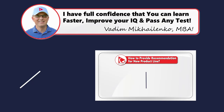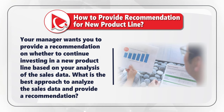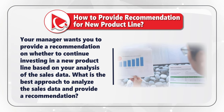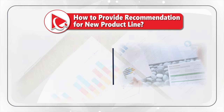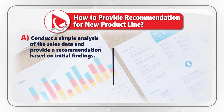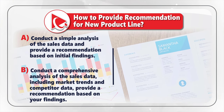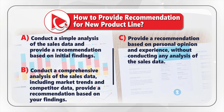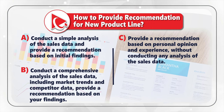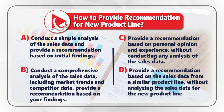Here's a question on how to provide a recommendation to your manager for a new product line. Your manager wants you to recommend whether to continue investing based on your analysis of the sales data. Choice A: conduct a simple analysis and provide a recommendation based on initial findings. Choice B: conduct a comprehensive analysis including market trends and competitor data, then provide a recommendation. Choice C: provide a recommendation based on personal opinion without any analysis. Choice D: provide a recommendation based on sales data from a similar product line without analyzing the new product line's data.